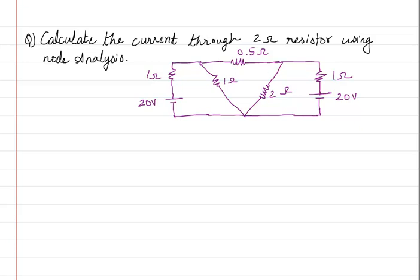Two nodes are done. Coming in between, I will have another node — that is the third node. Here also I will have a node — that is going to be my fourth node. The last, or fifth node, would be this complete stretch here.